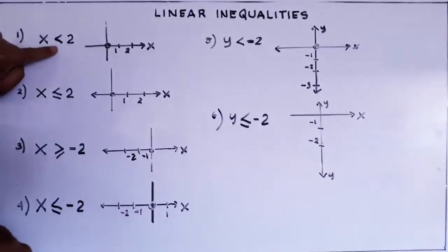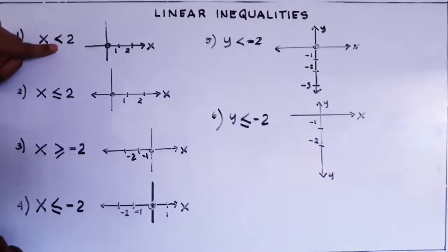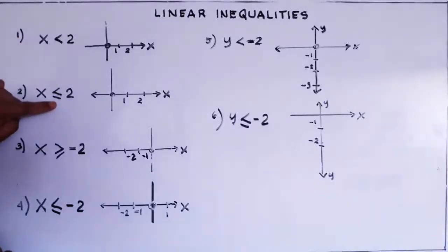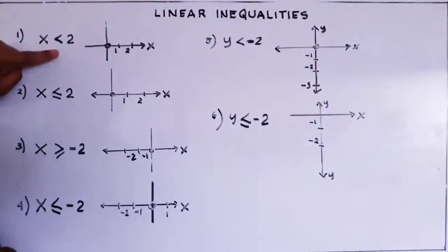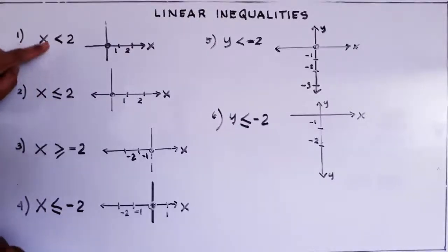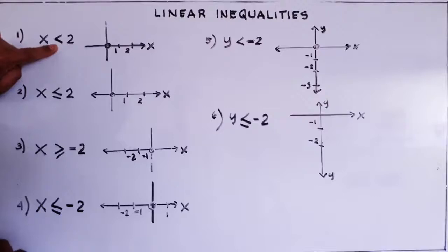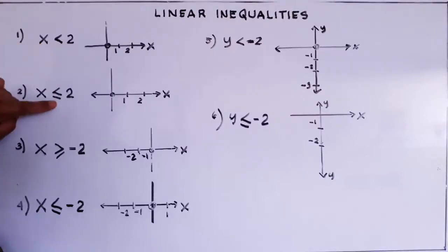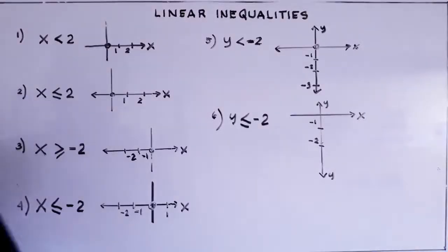We have the less than symbol, and this one is less than or equal to. What's the difference between less than and less than or equal to? The difference is that when we plot less than, we have a dotted line. And for less than or equal to, it is a visible, solid line.